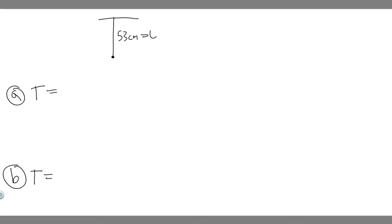So the formula to solve for the period is essentially 2π times the square root of the length divided by the gravity that's going to be experienced. So we know both of these. The gravity on Earth is just 9.8 meters per second squared, and then the length of it is just 53 centimeters.